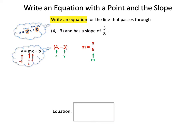So let's write down what we have. Negative 3 for y equals 3 eighths times 4, that's your mx, and then plus b. We're going to use these values to solve for b.